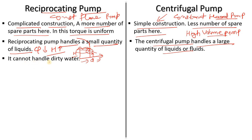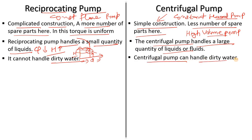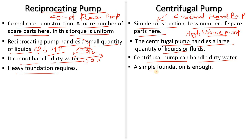A reciprocating pump cannot handle dirty water, while a centrifugal pump can handle dirty water — you can use a strainer at the suction side. Reciprocating pumps also require a heavy foundation due to more noise and vibration, while centrifugal pumps have a simple, lighter foundation.